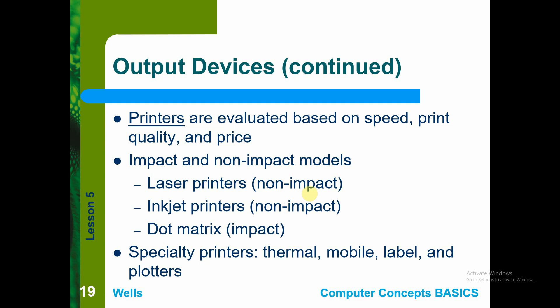The impact printer has the advantage of being very fast and easy to produce output because of the technology. Laser and inkjet printers use ink for printing but do not use the dot matrix impact type.